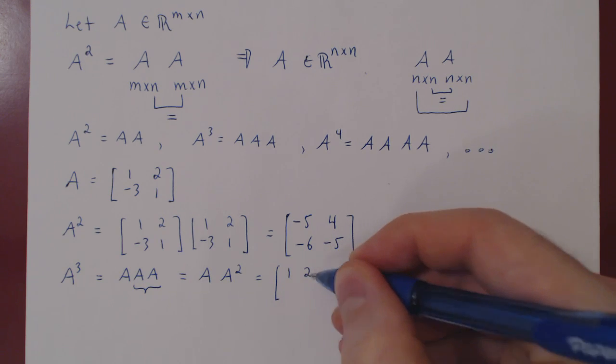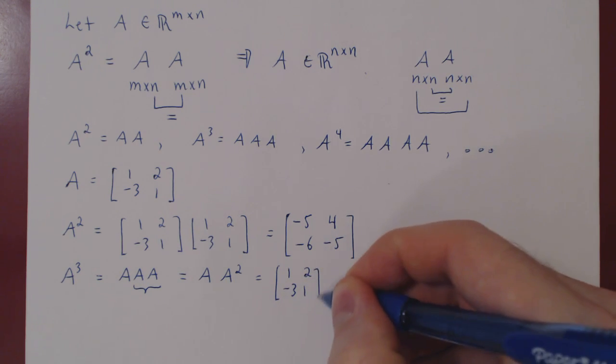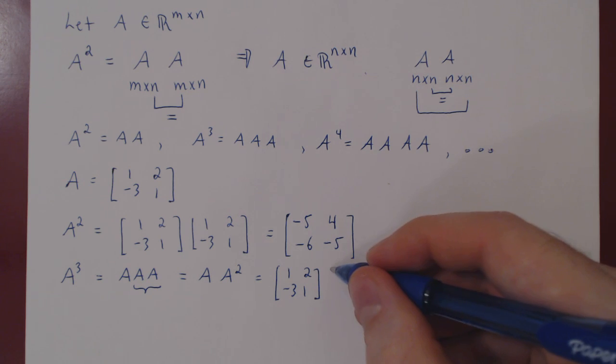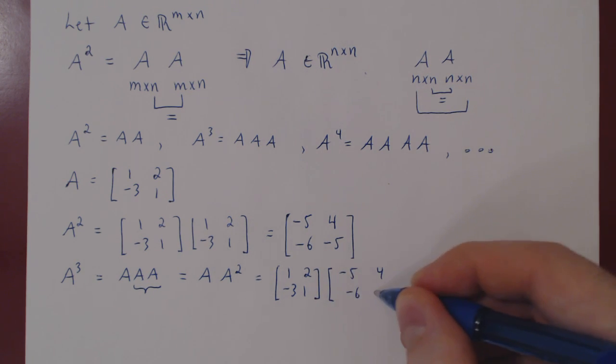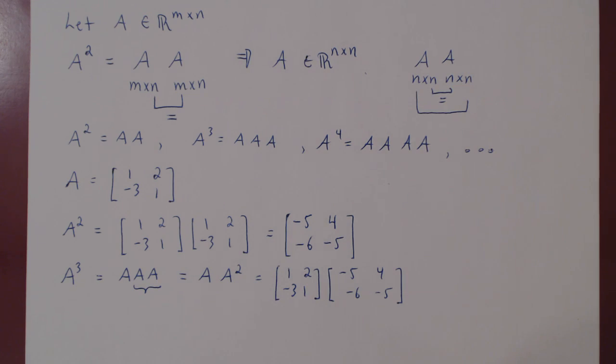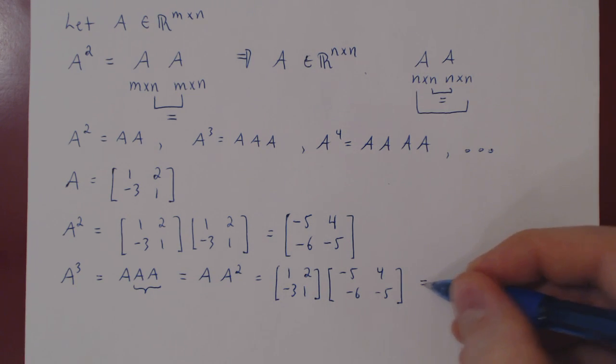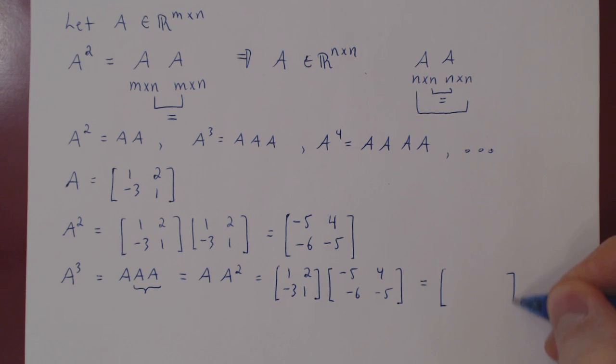So 1, 2, negative 3, 1, matrix A, times A squared, negative 5, 4, negative 6, negative 5. Once again the result is a 2 by 2 matrix.